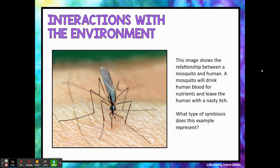In our last example, we have the relationship between a mosquito and a human. A mosquito drinks human blood for nutrients, depleting the human of some of those nutrients and leaving behind a pretty nasty itch. This represents parasitism because the mosquito gets the benefit, and then its host — in this case the human — is harmed.